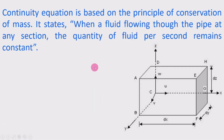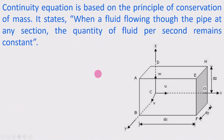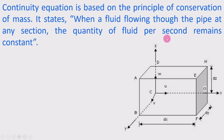Here we will first cover what is meant by the continuity equation, then the considerations for deriving the three-dimensional continuity equation. The continuity equation is based on the principle of conservation of mass. It states that when fluid is flowing through a pipe, at any section the quantity of fluid per second remains constant.